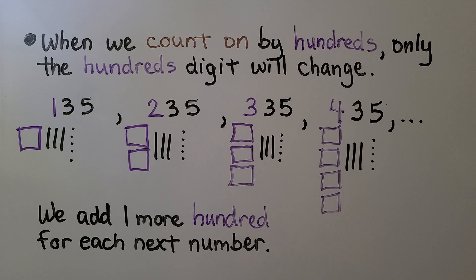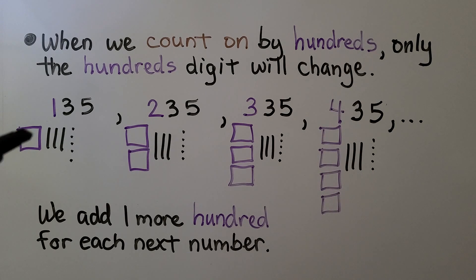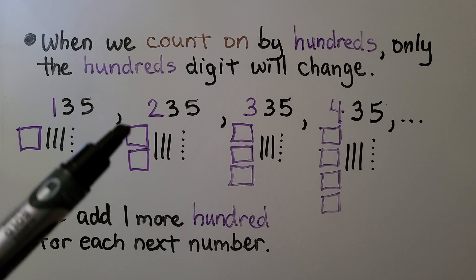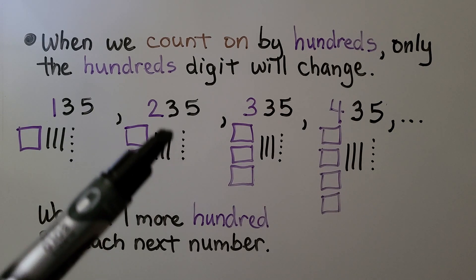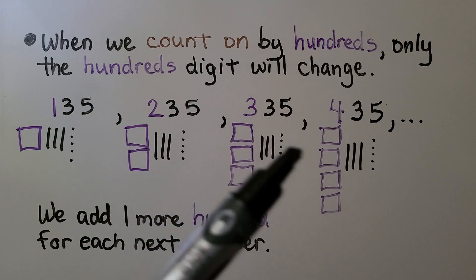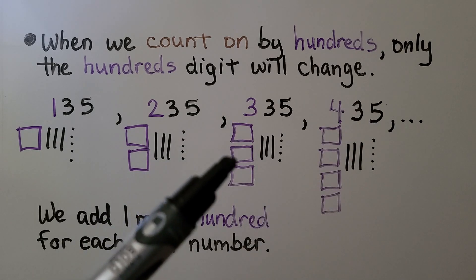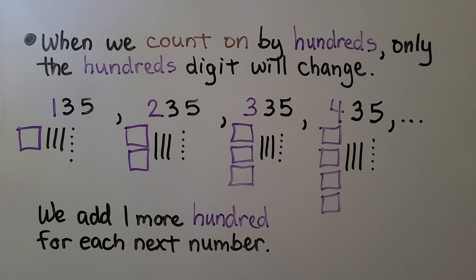When we count on by 100s, only the 100s digit will change — the 10s and 1s will stay the same. We have 135: that's 1 hundred, 3 tens, 5 ones. Then 235 is 2 hundreds, 3 tens, 5 ones. The 10s and 1s are staying the same; we're adding one more 100 for each next number when we count on by 100s.